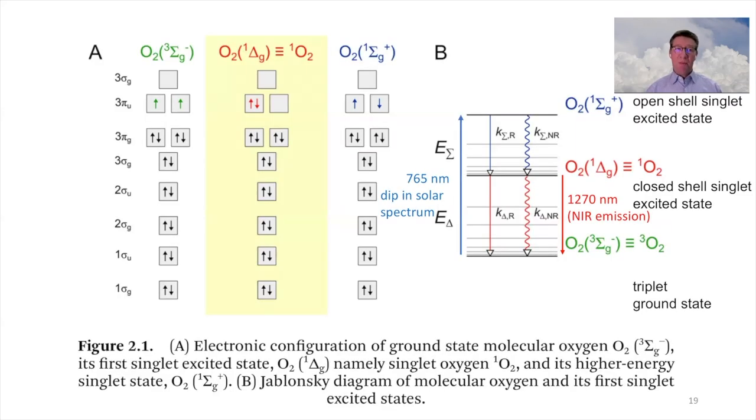Using molecular orbital schemes like before, we can now not only visualize the ground state, but also two singlet excited states. This is the ground state here in green. We have a triplet state. And we can excite the triplet ground state and go to the singlet excited state.